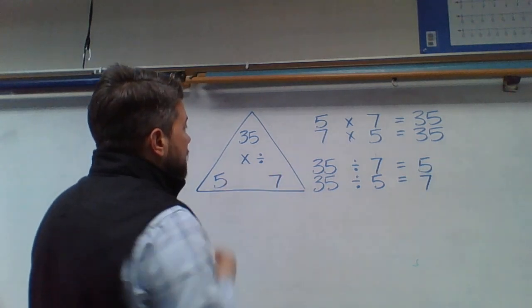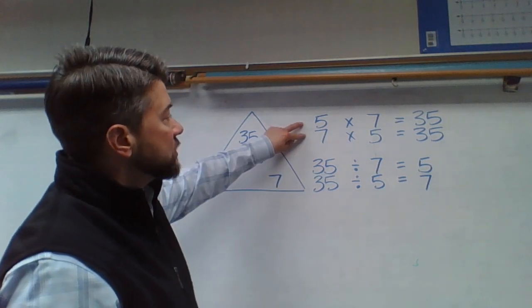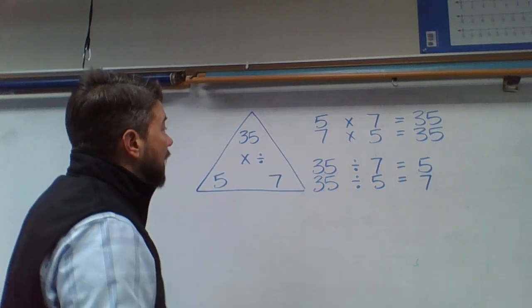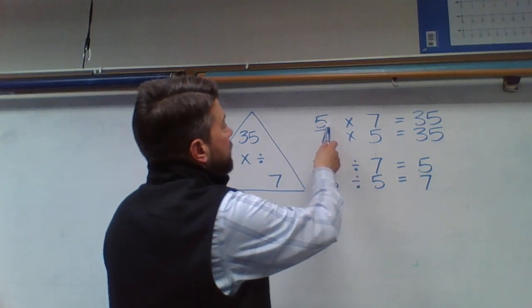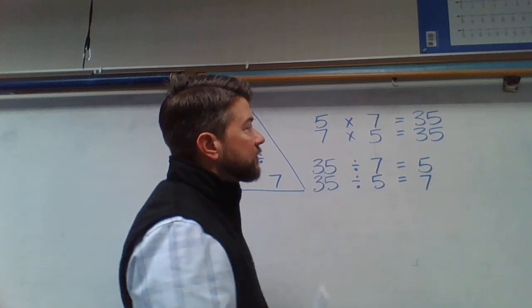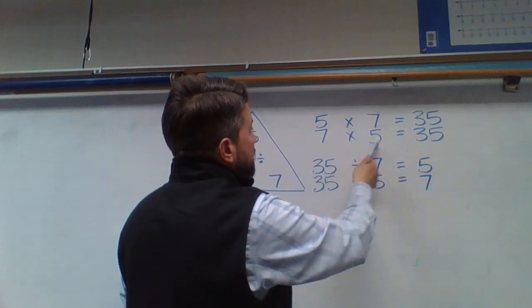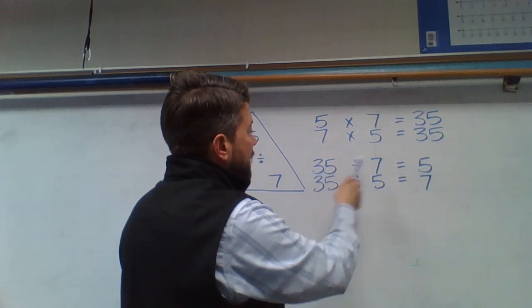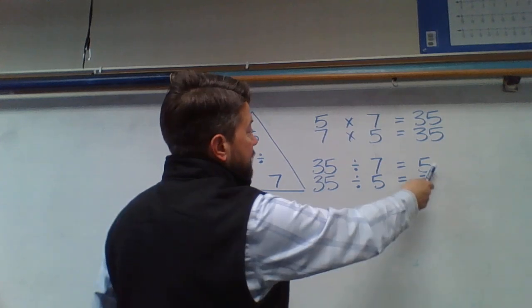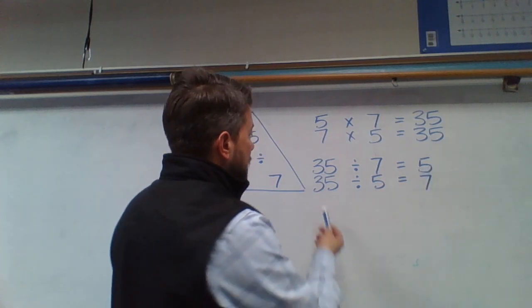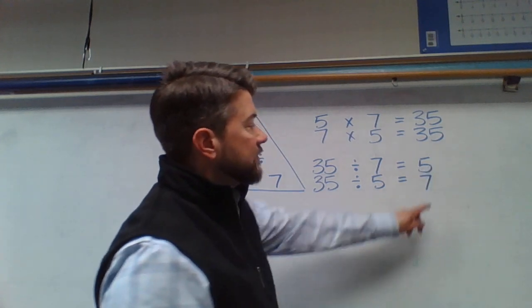For every fact family, you can have a total of two multiplication problems and two division problems. I chose the facts 5 times 7 gives us 35, so the reverse, 7 times 5 is 35. 35 divided into 7 groups would give us 5 in each group, and 35 divided into 5 groups would give us 7 in each group.